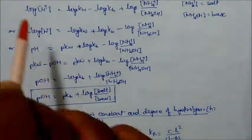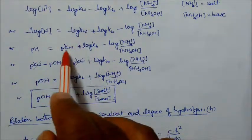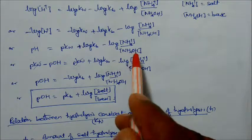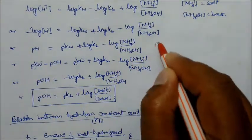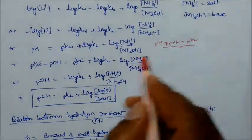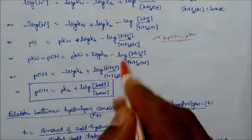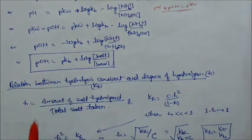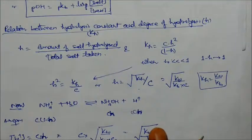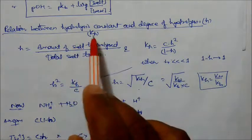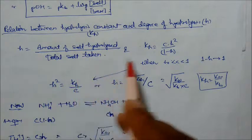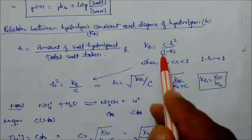Taking −log: pH = pKW − pOH; using pH + pOH = pKW, we derive pOH = pKB + log([salt]/[base]). Now for the relation between hydrolysis constant KH and degree of hydrolysis H: KH = CH² / (1−H). If H is very much less than 1, then (1−H) ≈ 1, so H² = KH/C, giving H = √(KH/C). Also, KH = KW/KB, and the amount of salt hydrolyzed divided by total salt taken equals H.